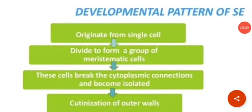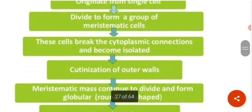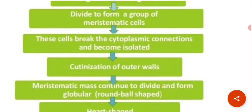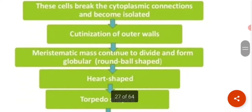The developmental pattern of somatic embryogenesis: it originates from a single cell which divides to form a group of meristematic cells. These cells break their cytoplasmic connections and become isolated. Then cutinization of the outer wall occurs, and the meristematic mass continues to divide and form a globular shape.